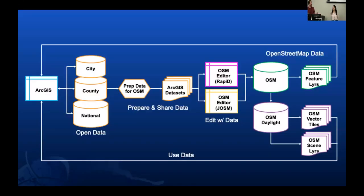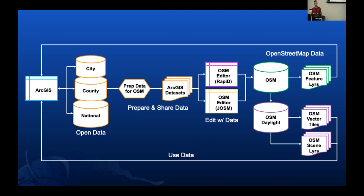At Esri, as a lot of you probably know, we have city, county, and national government agencies as customers. They have a lot of open data, and for a variety of different reasons, they want to see that open data in places like OpenStreetMap. The problem is they're always going to be creating that data in ArcGIS — hosting it there, managing it there, sharing it from there. And so they've never had until now a real good way of pushing features into OpenStreetMap.